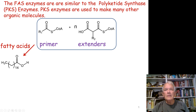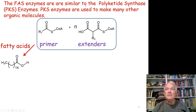In the previous video we talked about the synthesis of fatty acids. Fatty acids required a series of enzymes which put together multiple repetitive steps to build long-chain fatty acids. This machinery for fatty acid synthesis has been modified to form another system called the polyketide synthase enzymes.